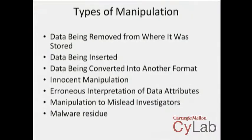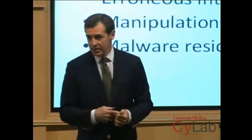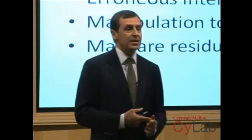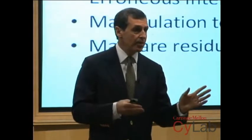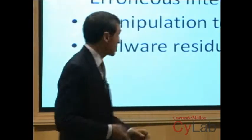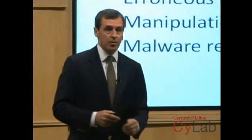Manipulation to mislead investigators — sometimes that is buried within the computer code itself, in some of the malware incidents we'll talk about. And the last category is malware residue. Some of the most insidious types of malware we've run into will leave certain residue — or what they call now 'data exhaust' — in the unallocated space of a hard drive. A lot of times people aren't paying attention to the importance of that data, and either don't copy it, ignore it, or write over it — and it can have very big implications. So those are the categories we're going to be talking about.